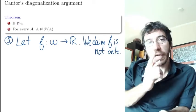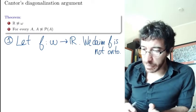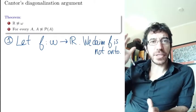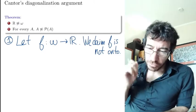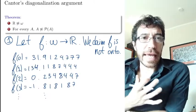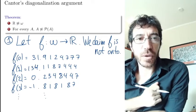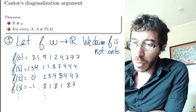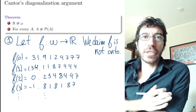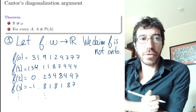There are going to be many such elements, but we're going to find just one. Let me list an example — it's just an example to get the idea of how the proof goes. Suppose the first few values of F look like this. What we're going to do is define a number that is different from all these numbers, from everybody in the image of F.